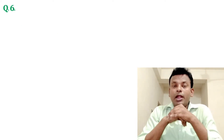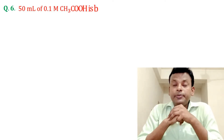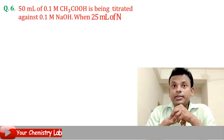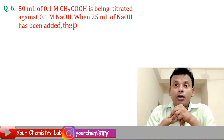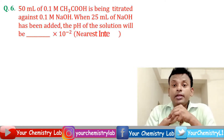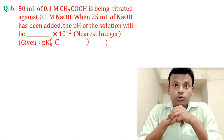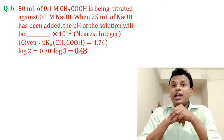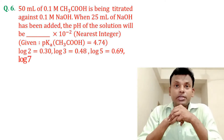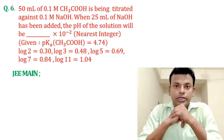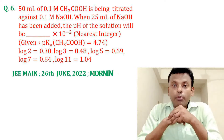Question six: 50 mL of 0.1 molar CH3COOH is being titrated against 0.1 molar NaOH. When 25 mL of NaOH has been added, the pH of the solution will be blank times 10 to the power minus 2 (nearest integer). Given: pKa of acetic acid equals 4.74. This question was set in JEE Main 26th June 2022 morning shift.